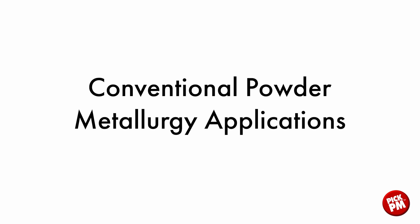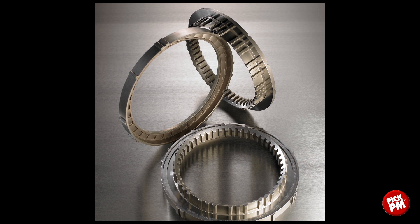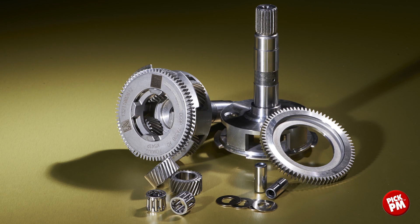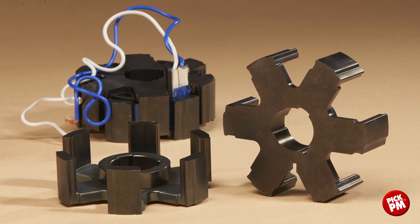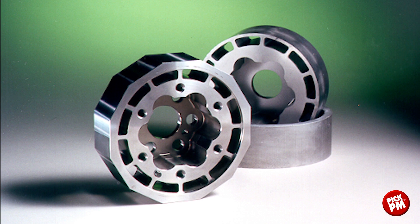Looking at some PM applications: notch and pocket plates used in one-way clutches in automotive transmissions are made from case-hardened steel and iron carbon steel. An automotive planetary carrier system includes a number of PM components that are pressed and sintered then sinter-brazed to form the carriers, with gears made from powder metal forged material. Stator cores for electric motors are made from soft magnetic composite insulated iron particles. A rotor core for a hybrid electric motor is made from a sintered soft magnetic outer rim, sinter-bonded to a copper steel inner hub.